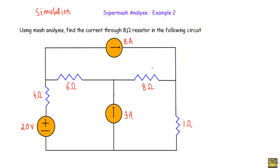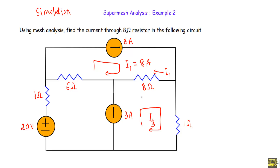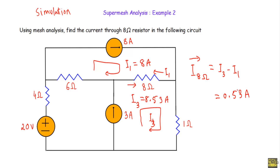Looking at the original circuit: I1 is 8 ampere flowing in its direction, and I3 is 8.53 ampere flowing in its direction. The current through the 8 ohm resistor equals I3 minus I1. Since I3 is greater than I1, the current through the 8 ohm resistor flows in that direction and equals 0.53 ampere. This result matches the simulation result shown earlier.